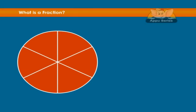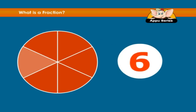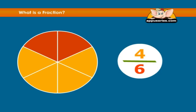What is a fraction? A fraction is a number that expresses part of a group. There are six pieces in the group and four of them are shaded, so the fraction 4 over 6 represents the shaded portion of the circle.